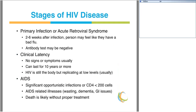Early in the infection process, acute retroviral syndrome can occur about two to six weeks after infection — persons sometimes feel like they have a very bad flu. During this phase, antibodies to HIV may not yet be present, so a standard HIV test may be negative. After acute retroviral syndrome passes, the patient typically goes into clinical latency, where the body somewhat controls the virus. There may be no signs or symptoms of HIV for ten years or more, though the virus is still replicating at low levels and doing ongoing damage to the CD4 count.